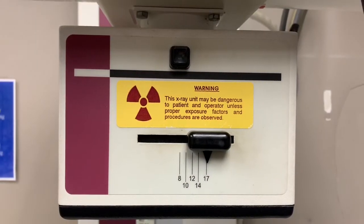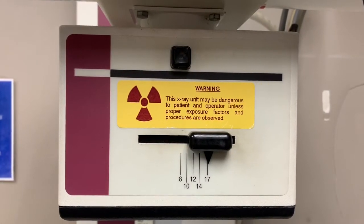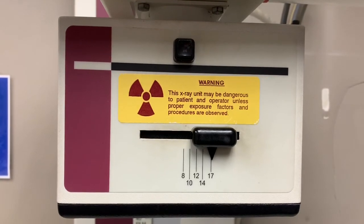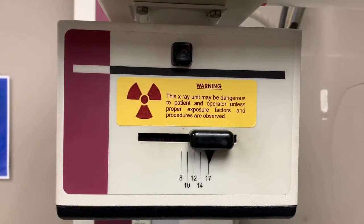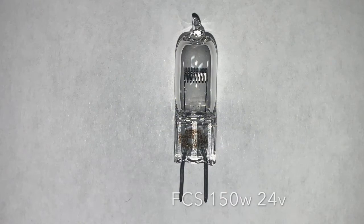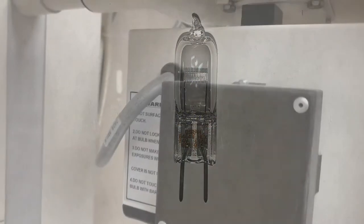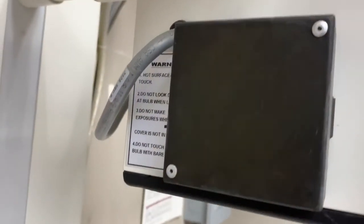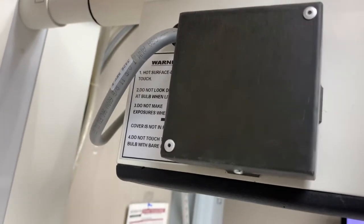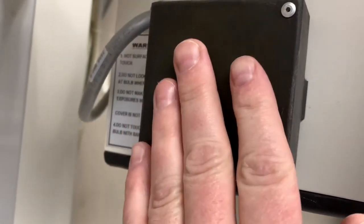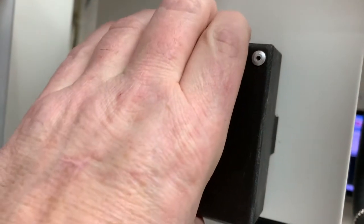This is a V-125 collimator. It uses the FCS 150 watt 24 volt bulb. To access the bulb, press the buttons on the top and bottom to remove the cover, but be very careful—the cover can be extremely hot.